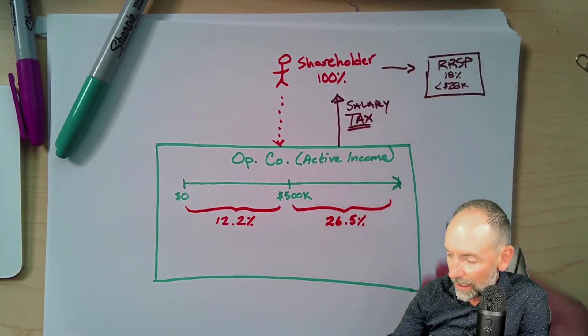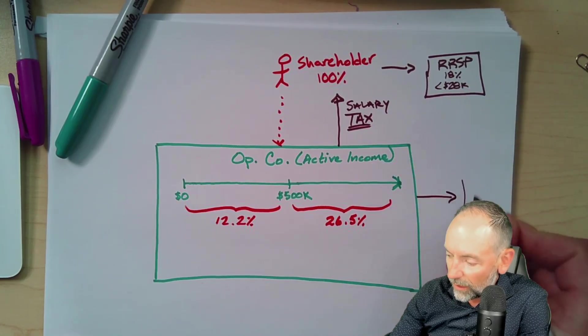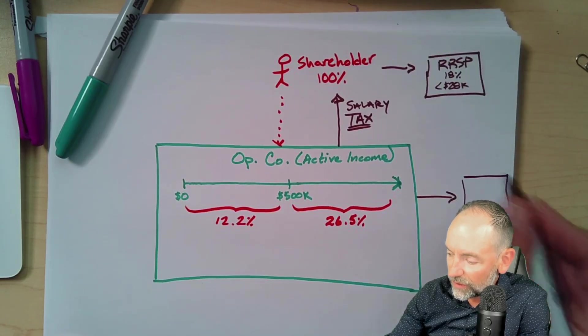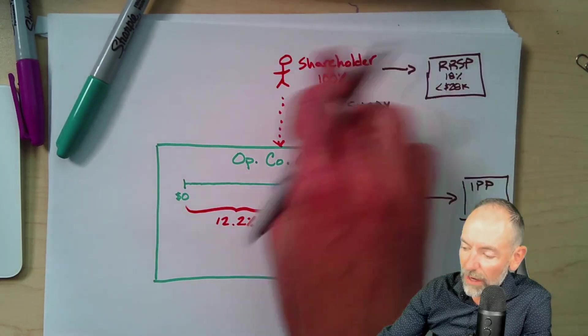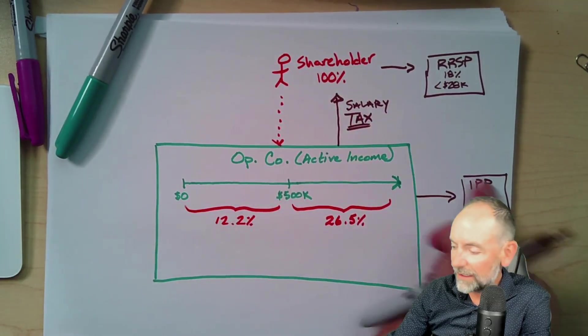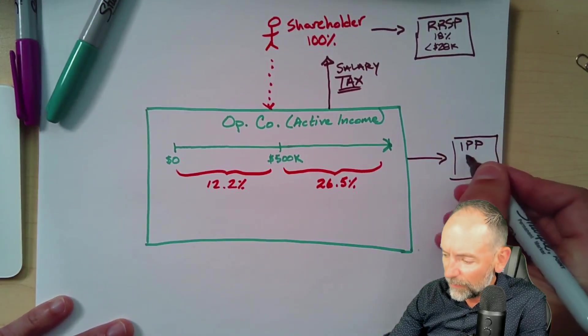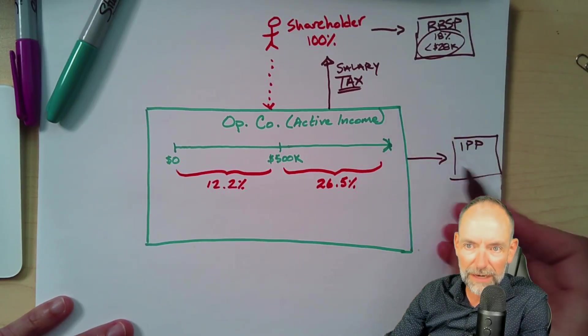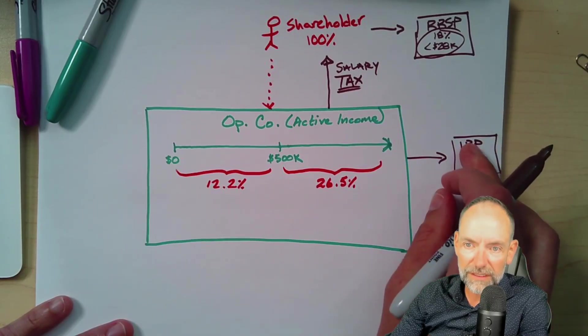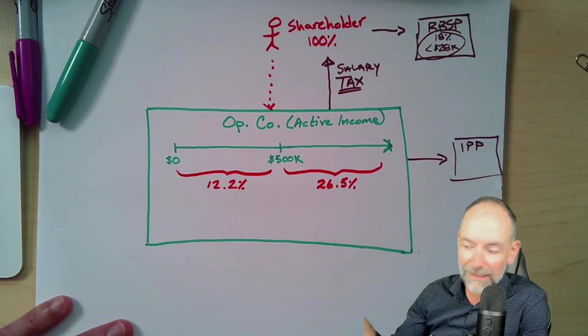The other option is, I could set up what we call an IPP, which is an Individual Pension Plan. Now, this is nice because it's creditor protected. But the problem is this is expensive to set up. And while you can contribute more than this amount each year, so there's some benefits there, they're very expensive to set up, they're very expensive to maintain. Now, if it's a significant amount of money in there, then the costs are gonna make sense.